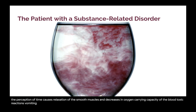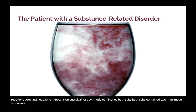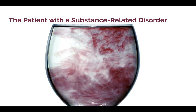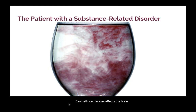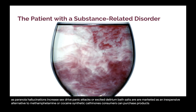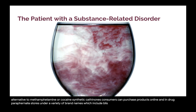Emerging drugs — synthetic cathinones (bath salts): bath salts contain two man-made stimulants, including mephedrone, which affect the brain similarly to MDMA or ecstasy. Bath salts are usually in the form of white or brown crystal-like powder which can be swallowed, snorted, smoked, or injected. Synthetic cathinones are part of a group of drugs called NPSs (new psychoactive substances); synthetic cathinone affects the brain similarly to cocaine but is 10 times more powerful. Bath salts can produce effects such as paranoia, hallucinations, increased sex drive, panic attacks, or excited delirium, and are marketed as an inexpensive alternative to methamphetamine or cocaine. Consumers can purchase products online and in drug paraphernalia stores under brand names such as Bliss, Cloud Nine, Lunar Wave, Vanilla Sky, or White Lightning.